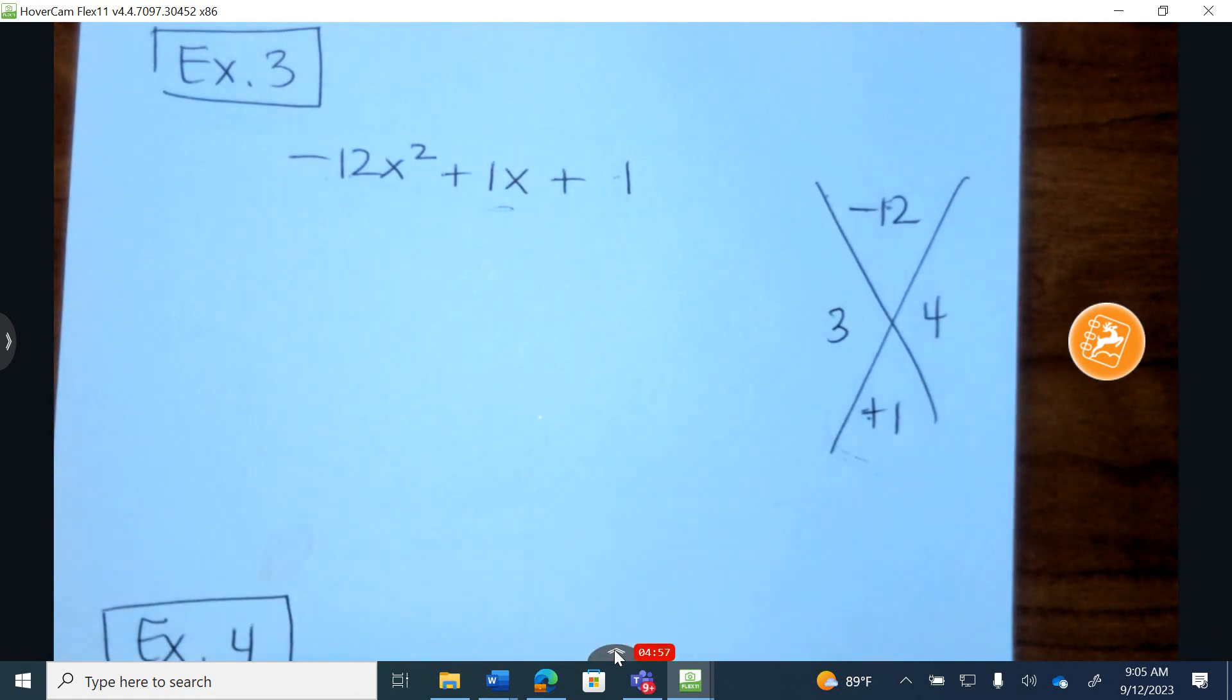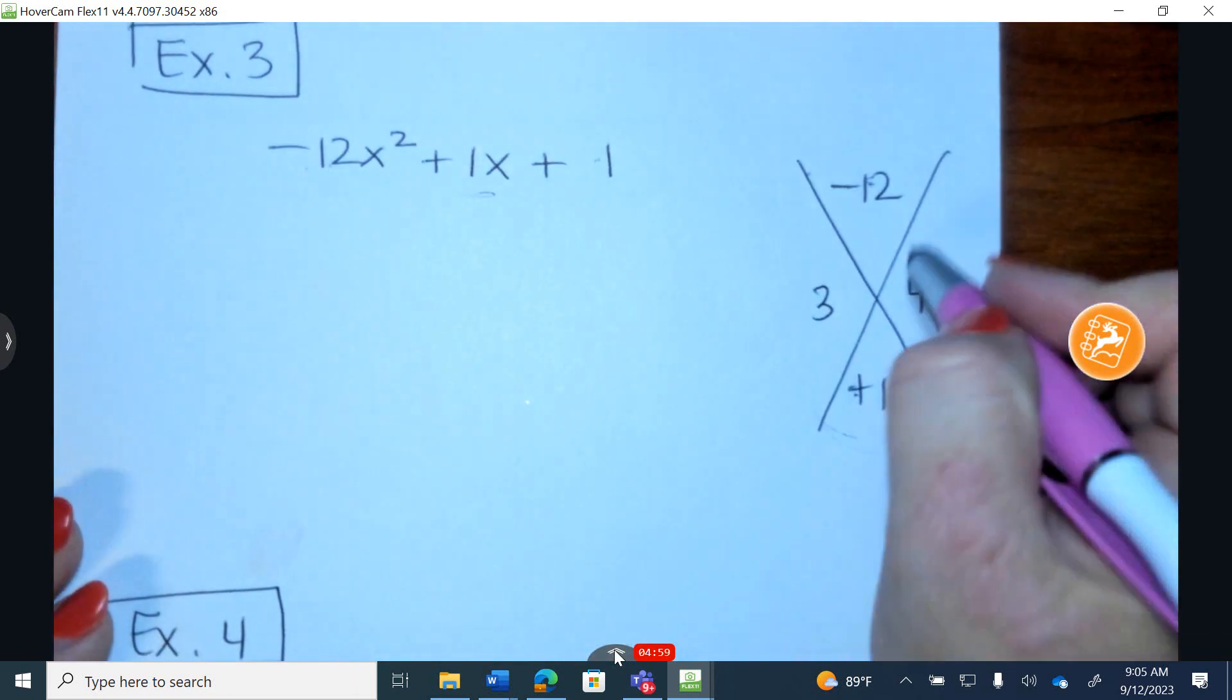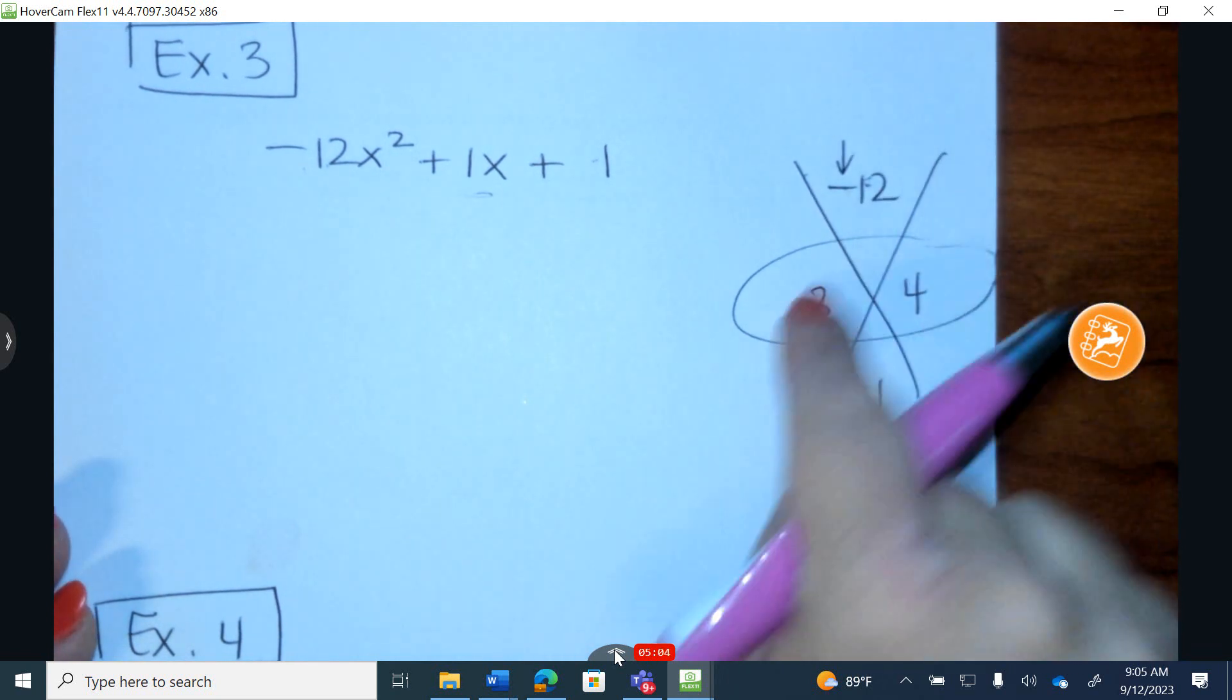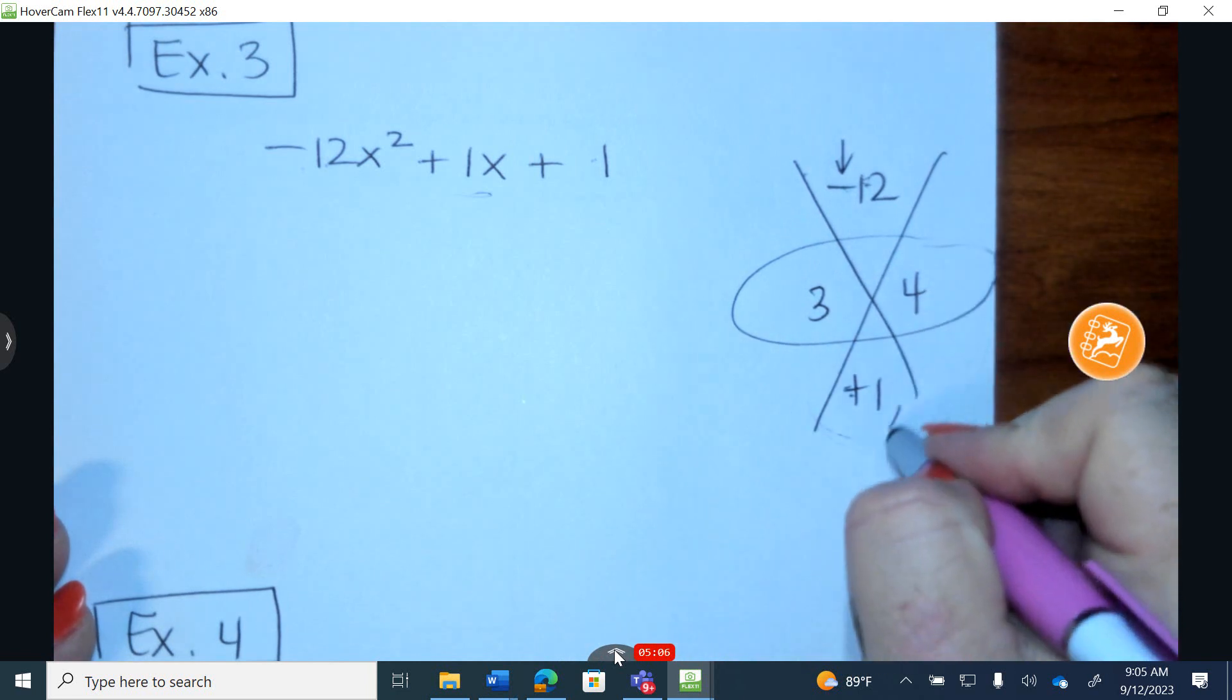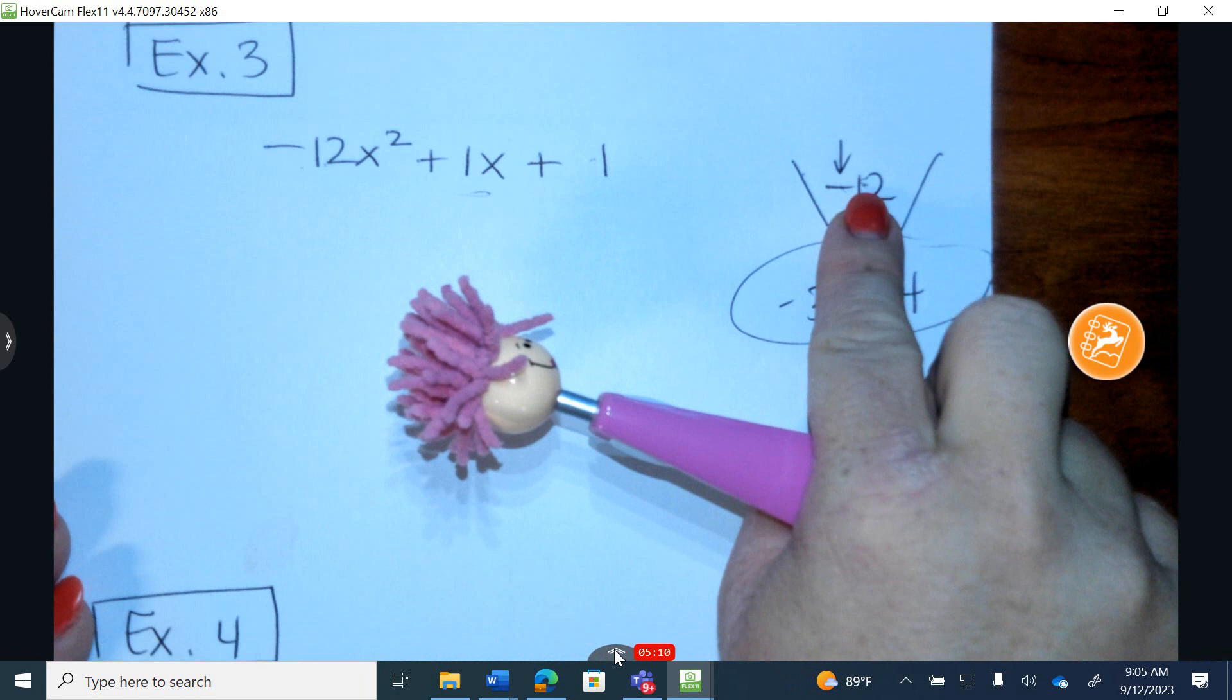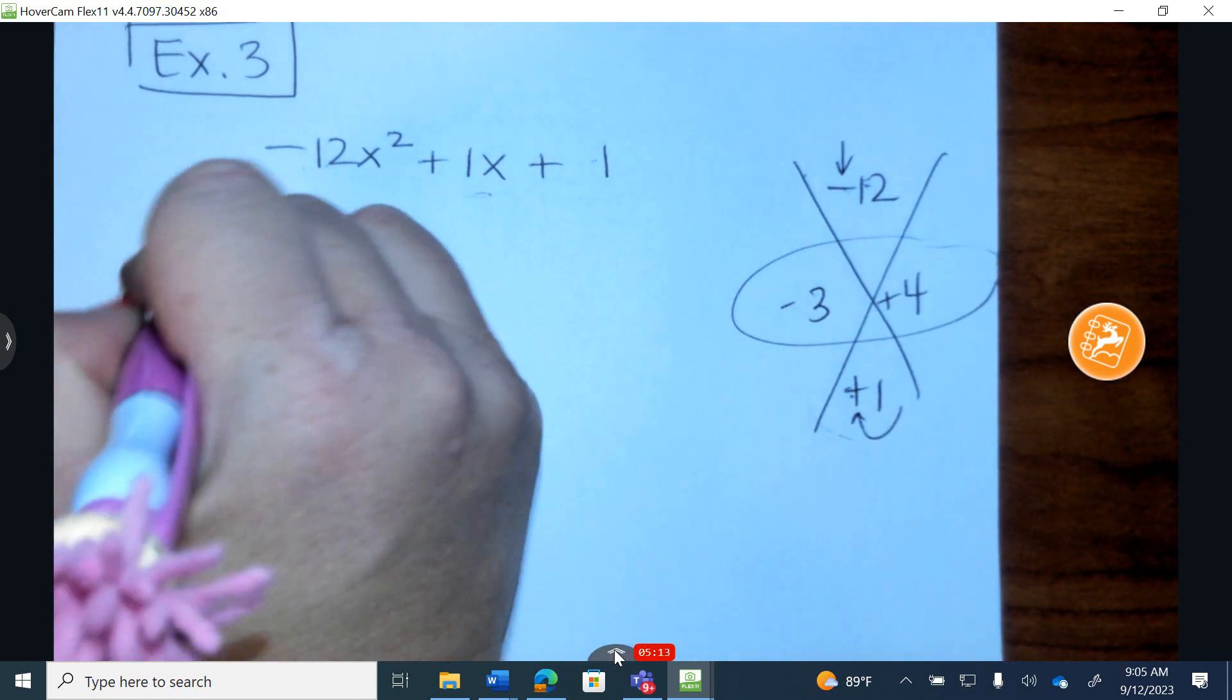If you can do that in your head, awesome. I'm just showing for students who may be confused how I come up with the combination. Now, they have to be different symbols if by multiplying you get a negative. So they're different symbols. This tells me the larger of the two numbers is positive. These multiply to give you negative 12 and combine to give you positive 1.